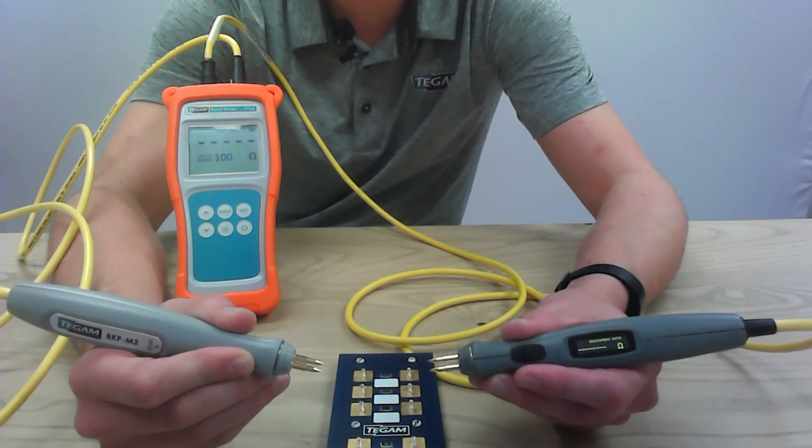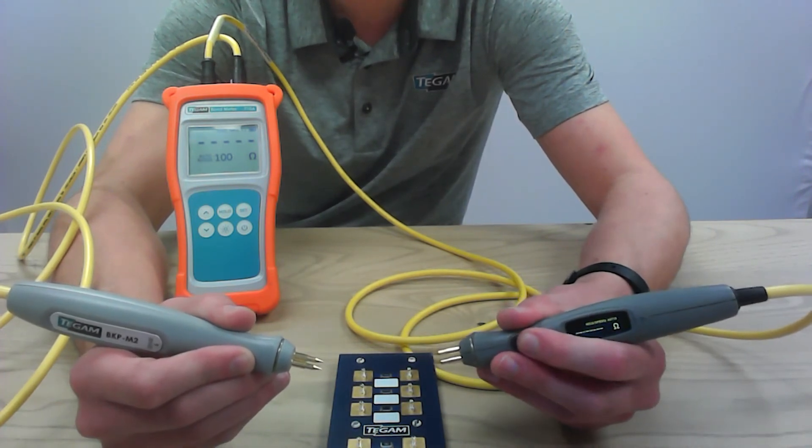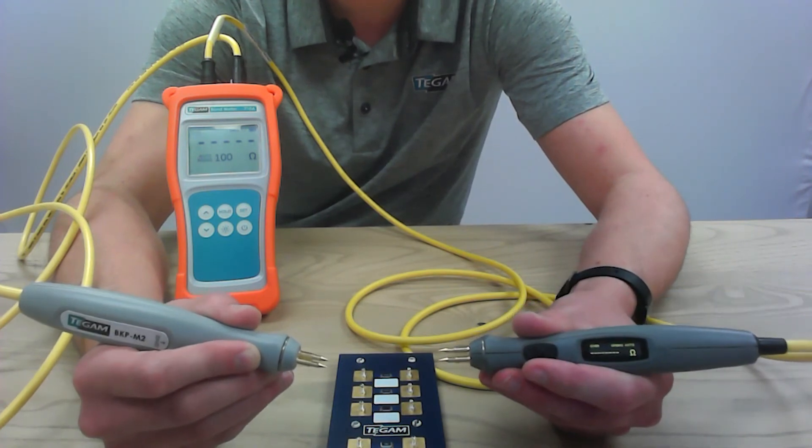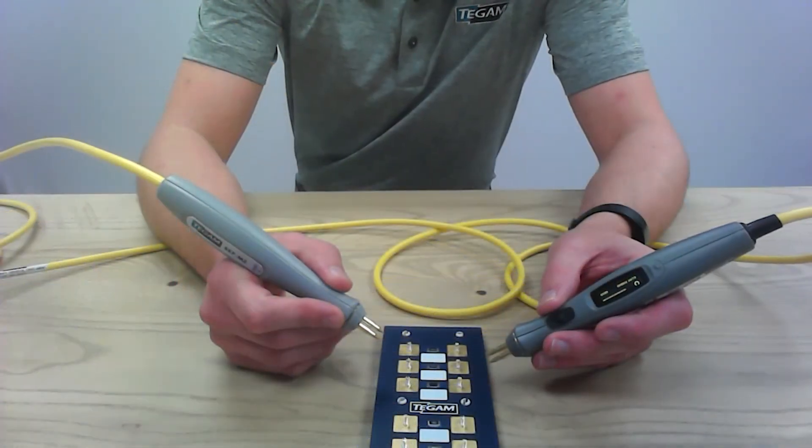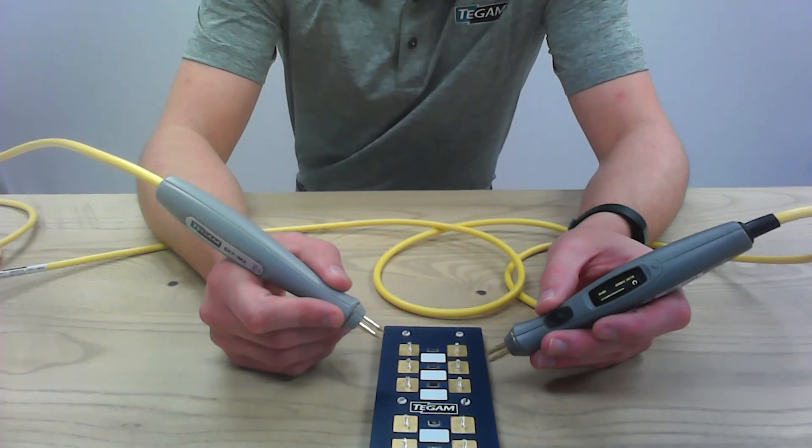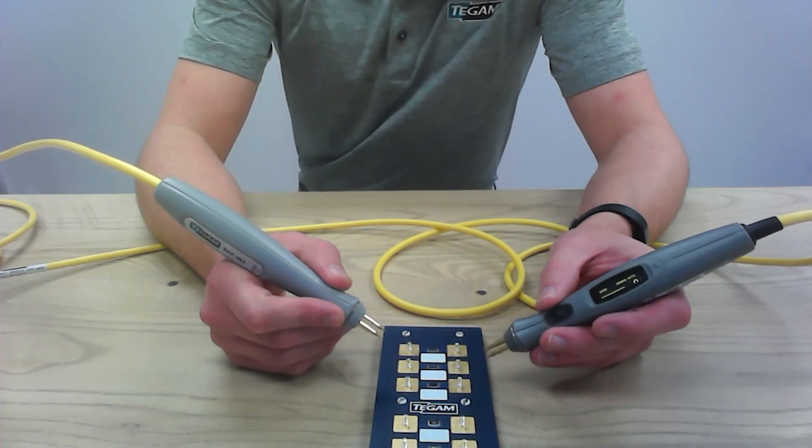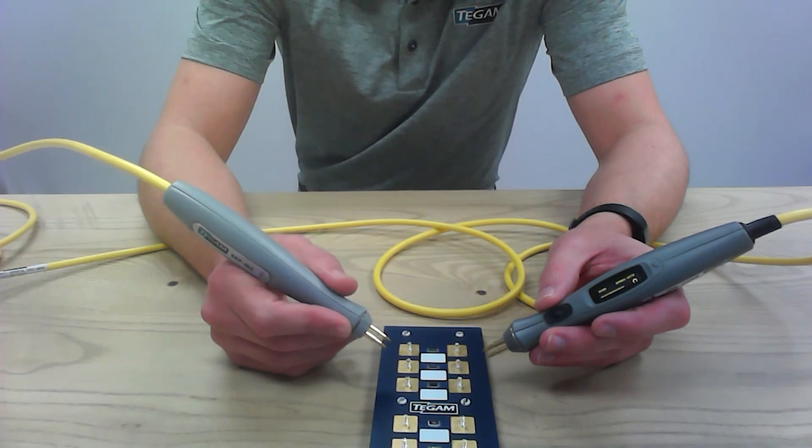This auto hold feature will stay on until you hold the button again to turn it off. When a test limit is set, you can also use the pass-fail LED on the display probe to determine what condition the device under test is in.